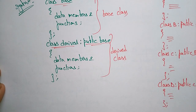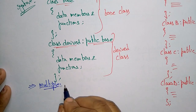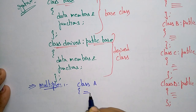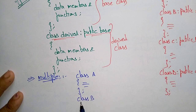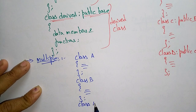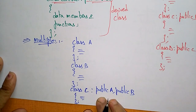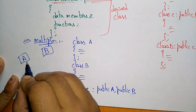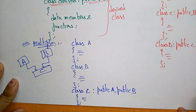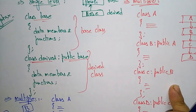Next is multiple inheritance. Suppose class A has some data members and functions, and class B also has data members and functions. To inherit both, you write: class C colon public A, public B. This is how you write multiple inheritance — both A and B are inherited into class C. Thank you.